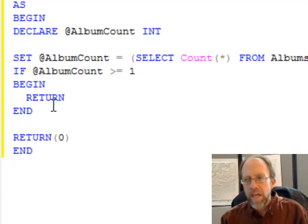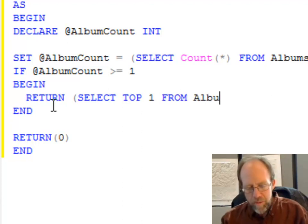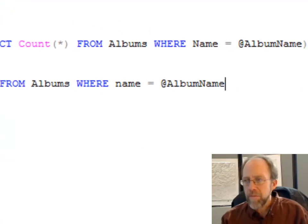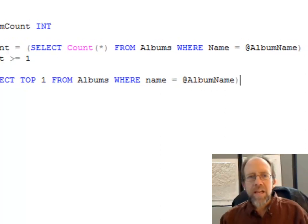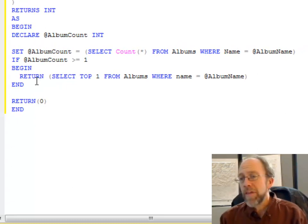So, I'm going to have a beginning and an end that go with the if statement, but in this case, I'm going to have return, and I need to figure out what I'm going to return. Well, let's, we only, it's a scalar, I've got to make sure I only return one thing, so I'm going to say, select Top 1 from albums where name is equal to at album name. So, I'm going to return the first album that's in that list, and that's going to return that, and I don't need anything else. If it's not greater than or equal to 1, it's 0, and it doesn't exist, and it returns a 0. So, that's the whole logic that goes with this function.